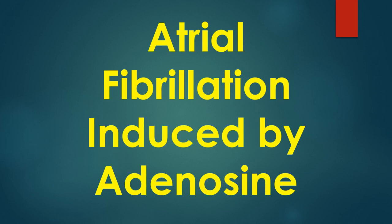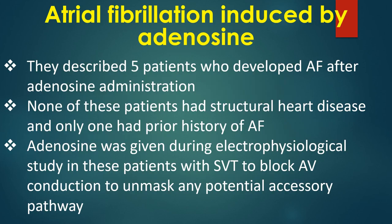Adenosine is widely used in the termination of supraventricular tachycardia. One of the initial reports of atrial fibrillation induced by adenosine was by Silverman and associates in 1996. They described 5 patients who developed AF after adenosine administration — none had structural heart disease and only one had a prior history of AF. Adenosine was given during electrophysiological study in these patients with SVT to block AV conduction and unmask any potential accessory pathway, administered during sinus rhythm and not during SVT.